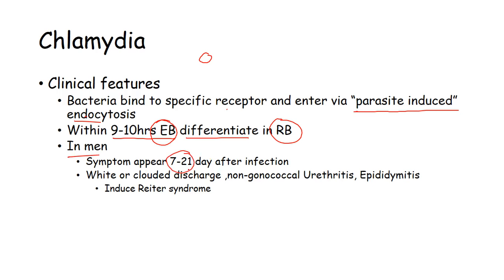In men, symptoms appear usually 7 to 21 days after infection, which include white or cloudy discharge from the genitals, non-gonococcal urethritis, epididymitis, and Reiter's syndrome.